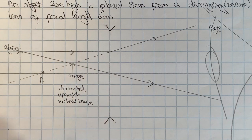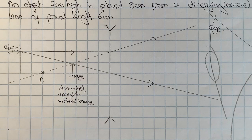So I have discovered that it is a diminished, upright, and virtual image. The good thing about these concave or diverging lenses is that they always produce that kind of image, so the ray diagram always looks much the same.